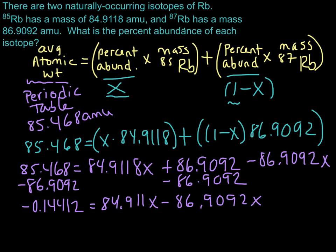So let's subtract those guys. So we're going to end up with 84.911x, and then we're going to subtract off 86.9092. So we're going to end up with that equal to negative 1.9974x. So let's go to the next slide, and we'll finish this up.